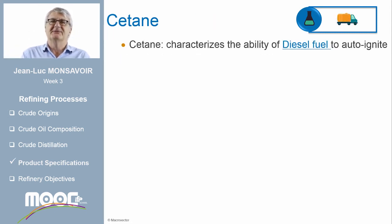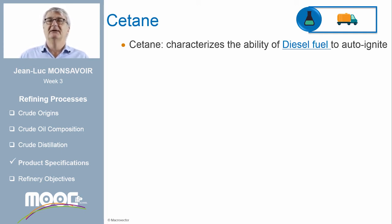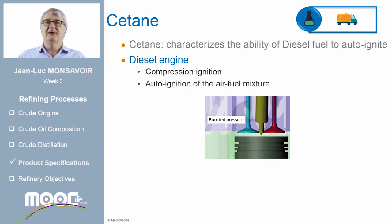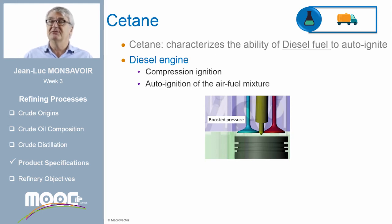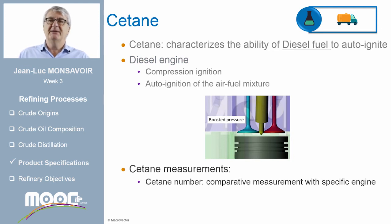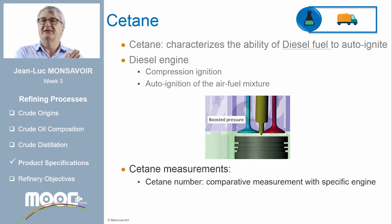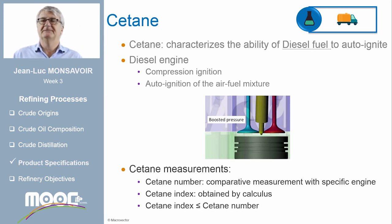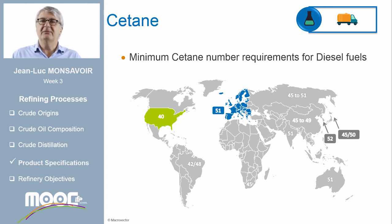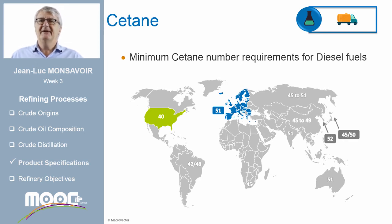Let's now look at the cetane specification. Just remember: the cetane number is the opposite of the octane number. Cetane characterizes the ability of diesel fuel to auto-ignite. The diesel engine is a compression engine where the air-fuel mixture auto-ignites, so it is important to master the auto-ignition delay and consequently the cetane value. Two types of cetane requirements exist: the cetane number, measured in a specific engine like the octane number, and the cetane index, obtained by calculation — which is always lower than the cetane number. A map presents the minimum cetane number requirements for several countries, showing very different limits across the world.